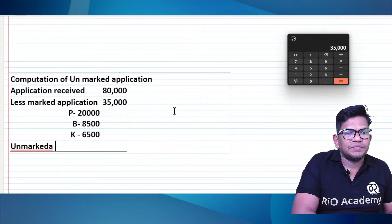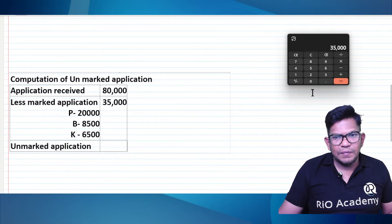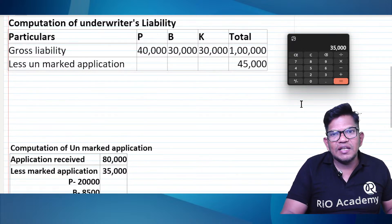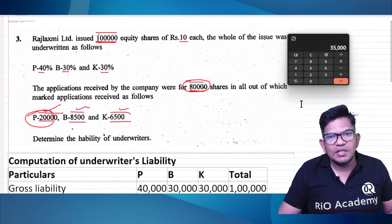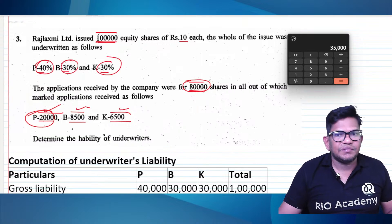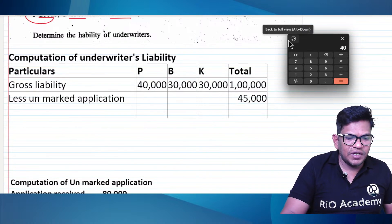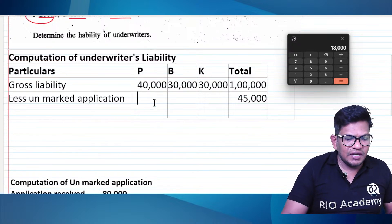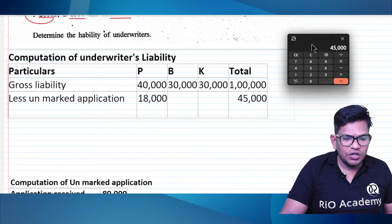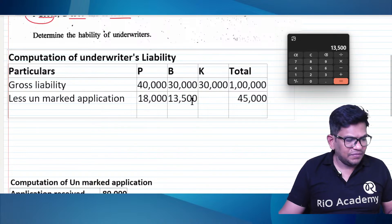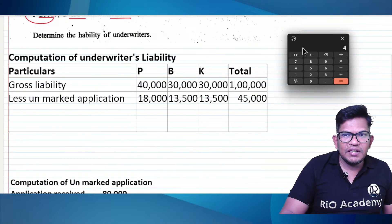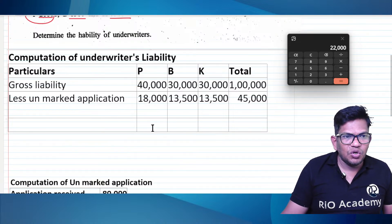Unmarked applications total is 45,000. These are distributed in the ratio of 40%, 30%, and 30%. So 45,000 into 40% equals 18,000. And 45,000 into 30% equals 13,500. Liability for K: 40,000 minus 18,000 equals 22,000.